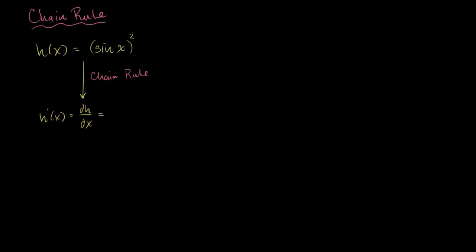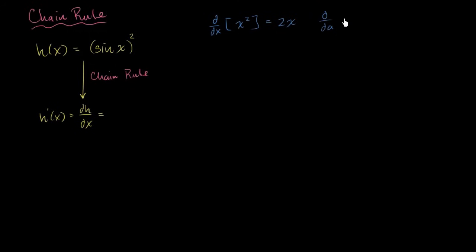I want to do a little thought experiment. If I were to ask you: what is the derivative with respect to x of x squared? Well, this gives me 2x — we've seen that many times. Now, what if I were to take the derivative with respect to a of a squared? It's the exact same thing — I just swapped an a for the x's — so this is still going to be equal to 2a.